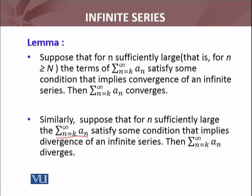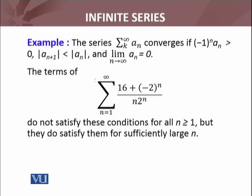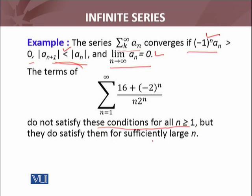Similarly, suppose that for n sufficiently large, the series Σ from n = k to ∞ of aₙ satisfies some condition that implies divergence of an infinite series. Then Σ from n = k to ∞ of aₙ diverges. Let's discuss an example: the series Σ from k = 1 to ∞ of aₙ converges if the conditions are: (−1)ⁿ · aₙ > 0, aₙ₊₁ < aₙ, and limit of aₙ = 0. Under these three conditions the series is convergent. Now what about a series whose terms do not satisfy these conditions for all n ≥ 1, but do satisfy them for sufficiently large n?